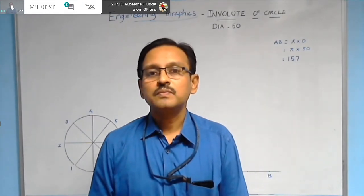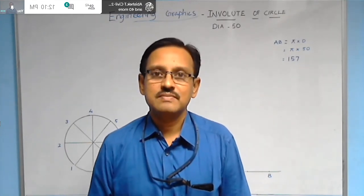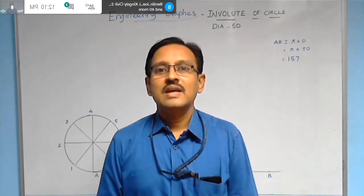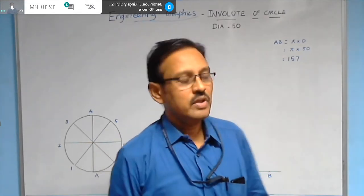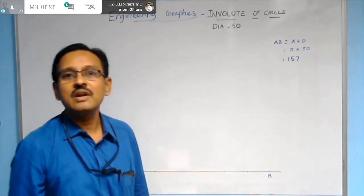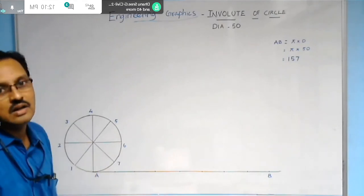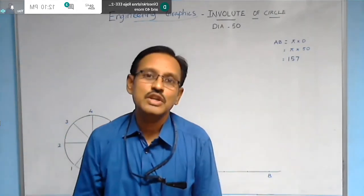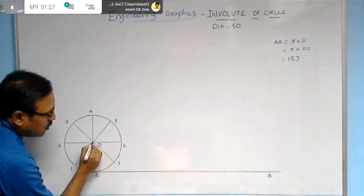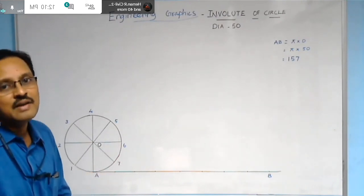Today we will construct an involute for a circle of diameter 50mm. To construct the circle, take 25mm as radius in your compass and with point O as center, construct the circle of radius 25mm, giving a diameter of 50mm.